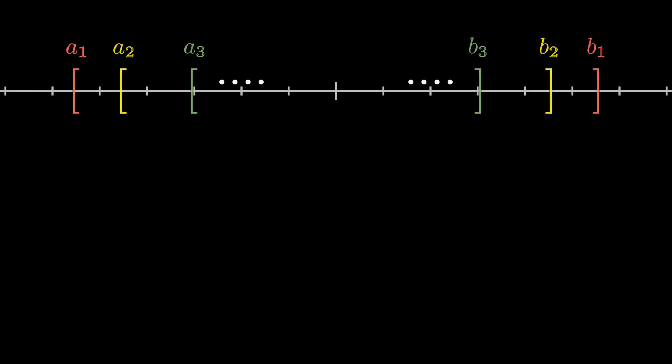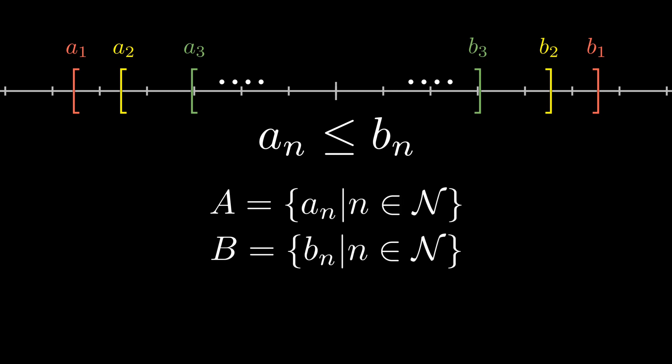Now before we prove that statement consider this picture. Here you can see that all the ans are less than bns. So if we define the set a to be the set of all ans and the set b to be the set of all bns, we will have that any element in the set b serves as an upper bound for the set a. We will use this fact in our proof. So let's begin.